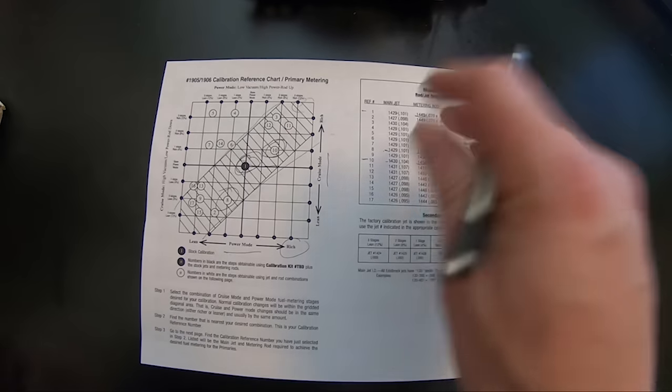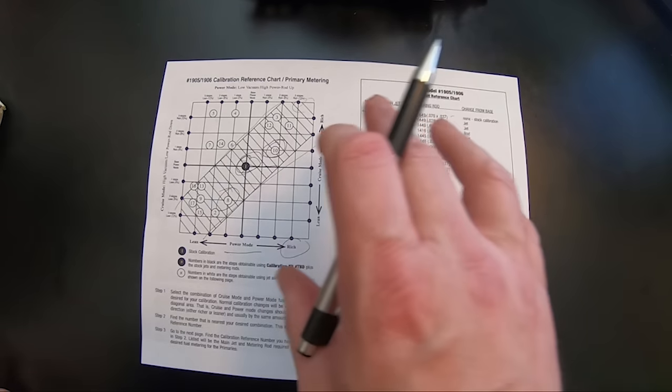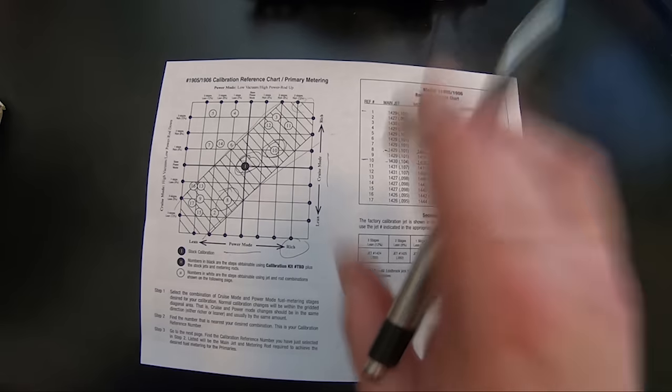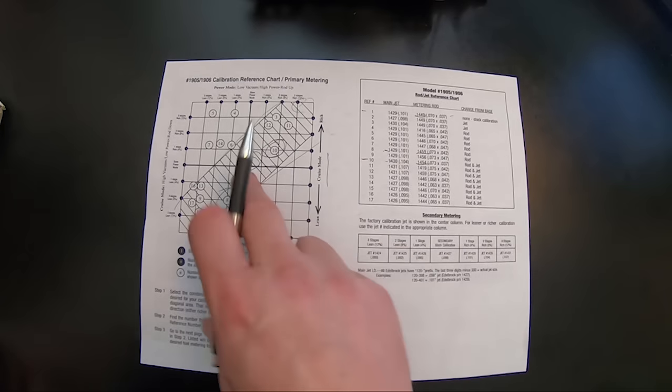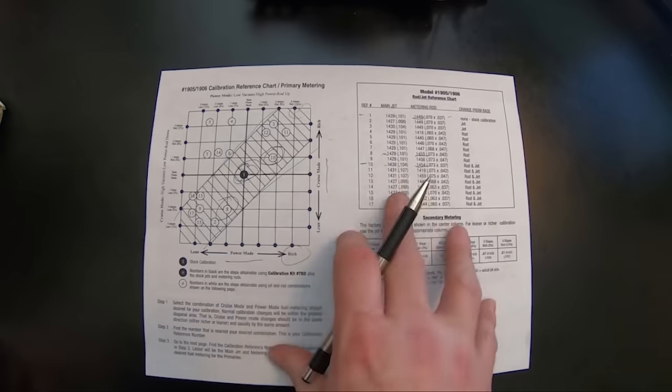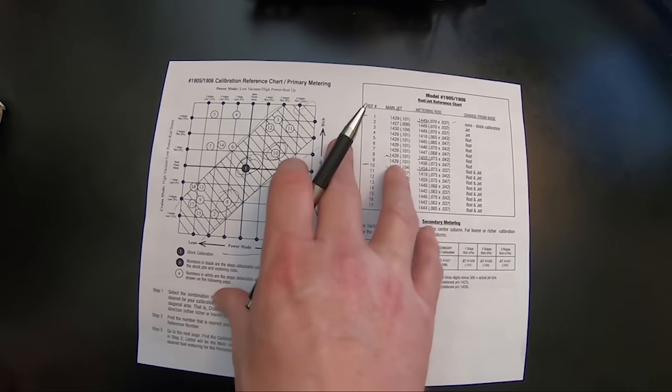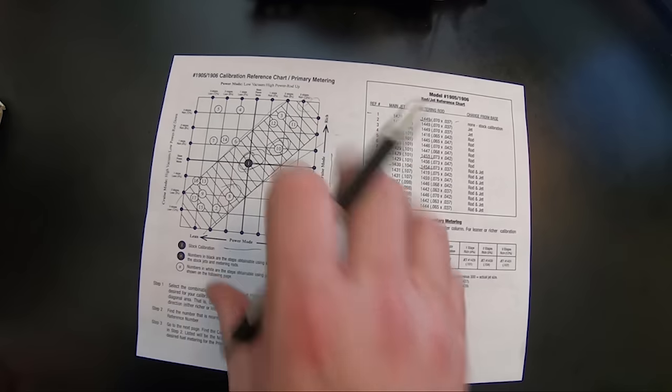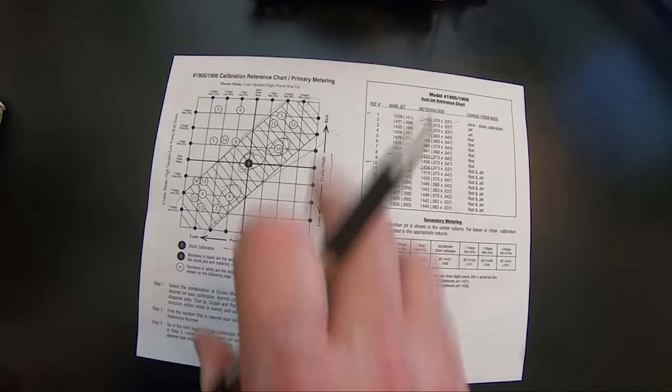Always kind of reference what you've got in the carburetor. Now, if you always, if you want to go back to the base setting, you know what the rod and jet change is to get there and you can do it. This chart here is super important and it'll be super helpful for you when you're making those small adjustments to try to take some hesitation out, find a little bit more power or maybe lean it out if it's getting too much fuel.